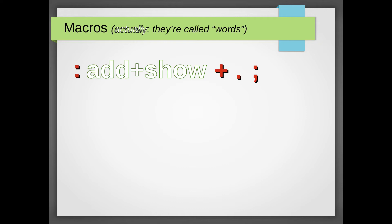But Forth has a second stack — the return stack. When you play the macro, it throws its current location on the stack, jumps to the macro, plays it back. And since the last instruction is the return command, it will grab that original location and continue execution from there.